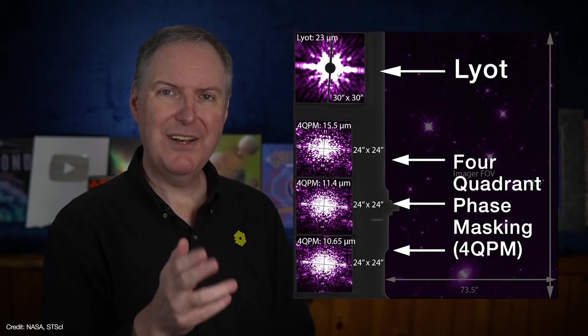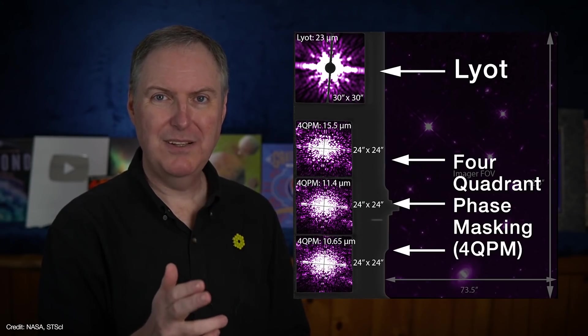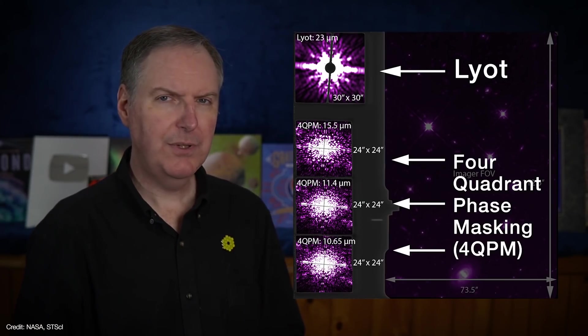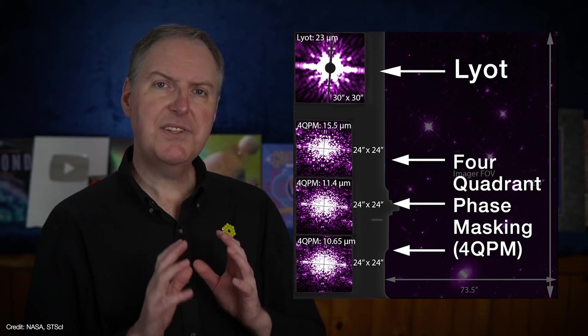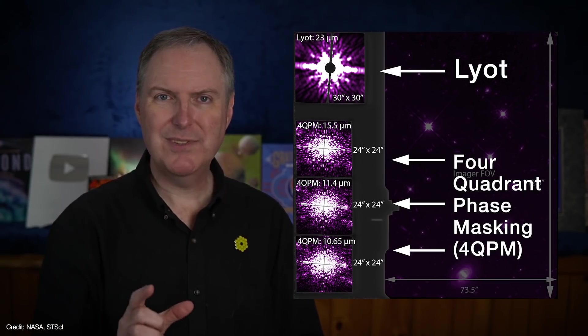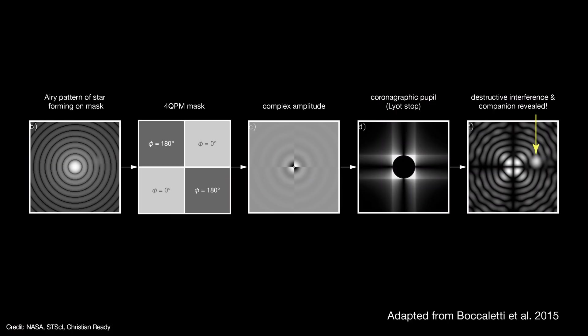But the mask always imposes a limit on just how close you can get to the star. And that's why MIRI allows for a new kind of coronagraphy called four quadrant phase masking, or 4QPM. It's a special mask that splits the field into four quadrants. Light waves passing through two of the quadrants are shifted 180 degrees out of phase with the waves passing through the other two. The two sets of waves destructively interfere and cancel each other out.